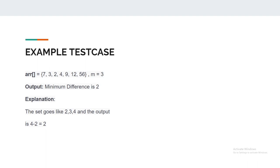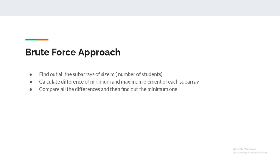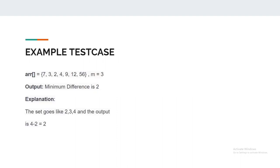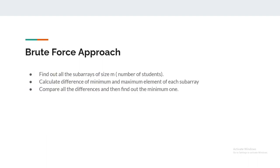I hope the question is clear. I'd request you to pause the video and try this question on your own. If you're not able to, please refer to the video solution. The brute force approach that comes to mind is to create all possible subarrays in O(n²) time, check the maximum and minimum value for each, find the difference, and keep comparing to find the final answer.